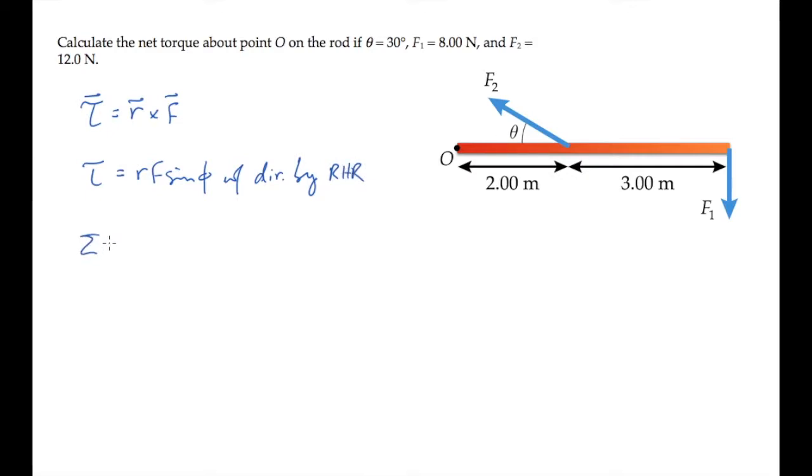We're asked to find the net torque on the rod about point O, and we'll call torques out of the screen, or counterclockwise, to be positive. There are two forces, so we'll have two torques.